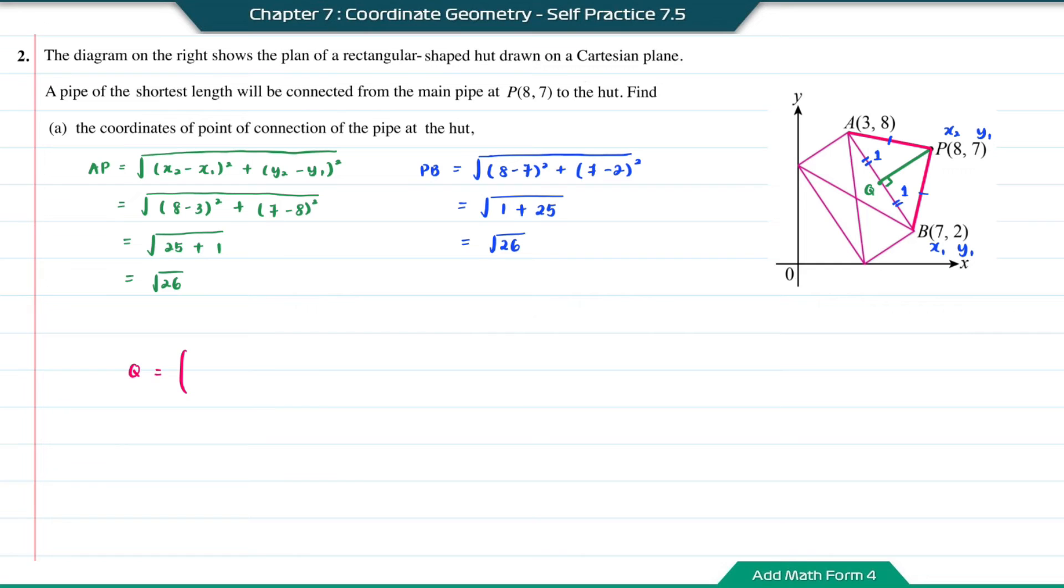To find the coordinate Q, first find the x-coordinate: (1×7 + 1×3) divided by the total ratio, which is 2. Followed by the y-coordinate: (1×2 + 1×8) divided by 2. So we get 10/2 and 10/2. Simplifying, the coordinate Q will be (5,5).